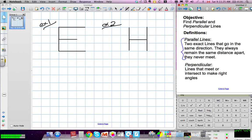Parallel lines are two exact lines that go in the same direction. They always remain the same distance apart, and they will never meet. So we can continue them forever and ever, and they'll never cross each other.